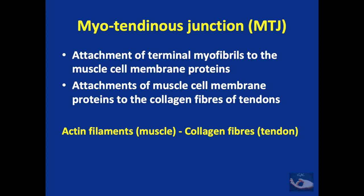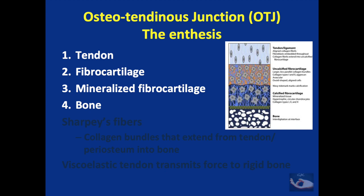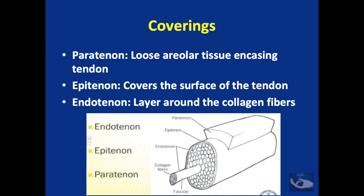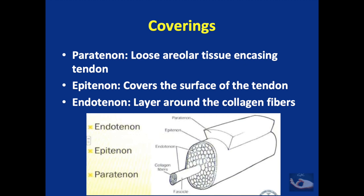So the actin filaments of the muscle are connected to the collagen fibers of the tendon. Similarly, the osteotendinous junction — otherwise known as the enthesis — is also unique. It has four zones starting from the tendon: the first zone is the tendon, the second is fibrocartilage, the third is mineralized fibrocartilage, and the last zone is the bone. It also contains specialized fibers called Sharpey's fibers, which are collagen bundles extending from the tendon to the periosteum in the bone. Thus, the viscoelastic tendon transmits force to a rigid bone. The coverings of the tendon are the paratenon — loose areolar tissue encasing the tendon — the epitenon, which covers the surface, and the endotenon, which surrounds the fibrils.